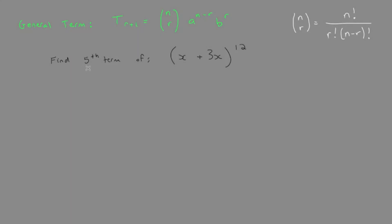We need to find the fifth term of this binomial, x plus 3x, with exponent of 12, or degree of 12.